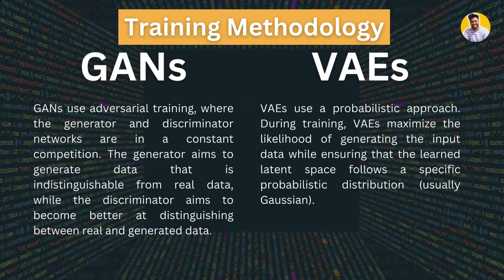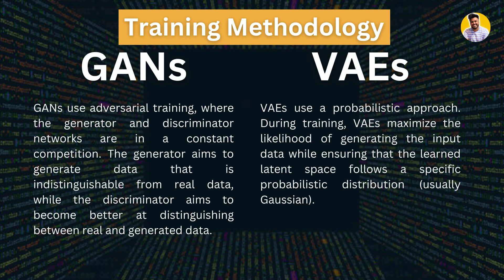Regarding training methodologies: GANs use adversarial training where the generator and discriminator are in constant competition. The generator aims to produce data indistinguishable from real data, while the discriminator tries to tell apart real from synthetic data. For VAEs, a probabilistic approach is used instead. During training, VAEs maximize the likelihood of generating the input data while ensuring that the learned latent space follows a specific probability distribution, typically a Gaussian distribution.